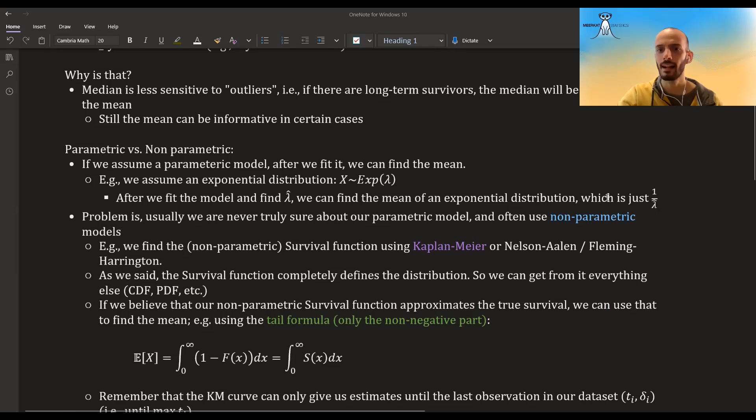And then once we have estimated the parameter lambda, the mean in this case is just one over this estimation. But usually we are not really sure about the parametric model and often we use a non-parametric model.